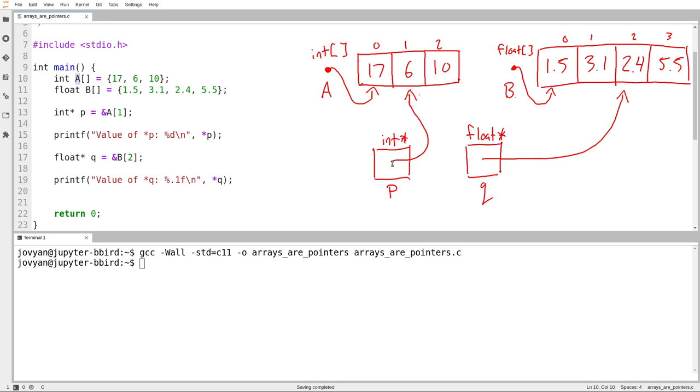So P can be modified to point at anything. It's a variable. I can modify its value. A is only really special in one way compared to other pointers, which is that it is locked to always point to this thing.